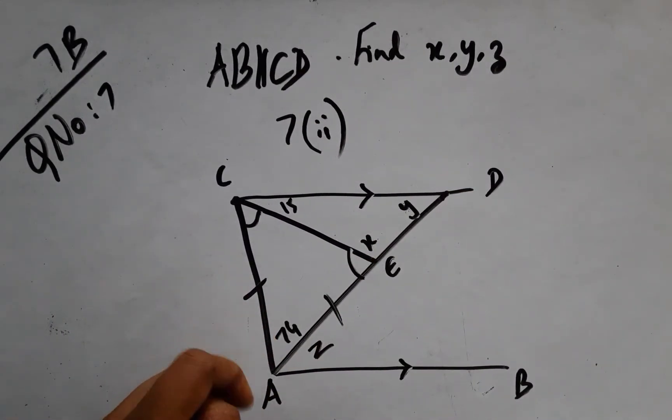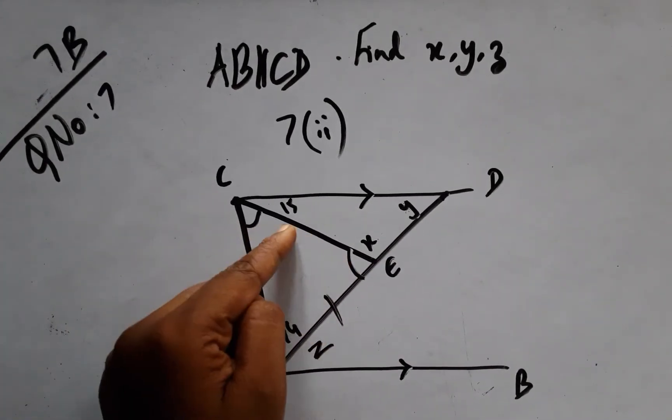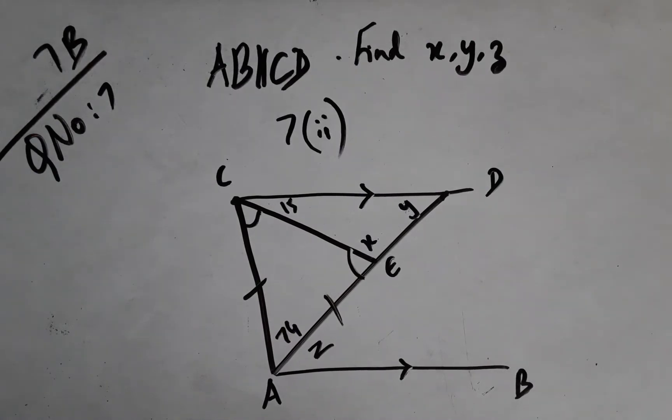Before that, we have also been given that AE equals AC. Therefore, this angle and this angle, the base angles, will be obviously equal, and let them be A.